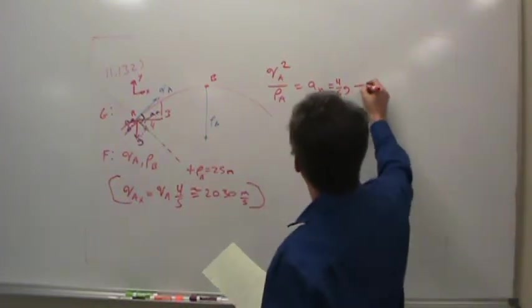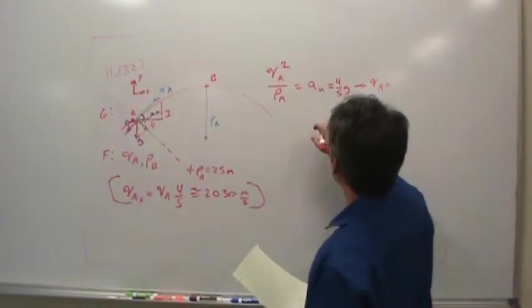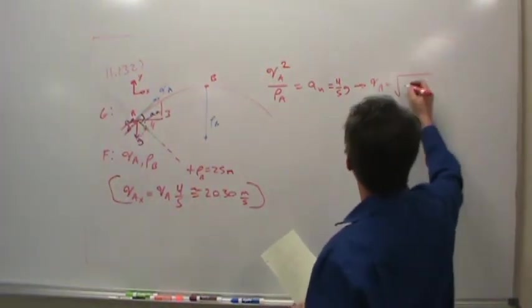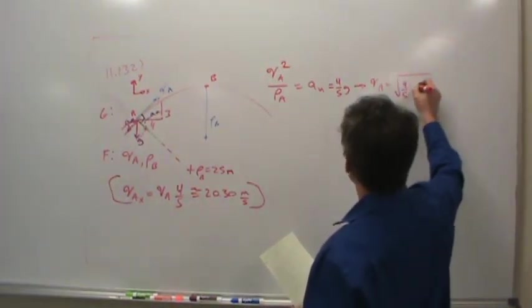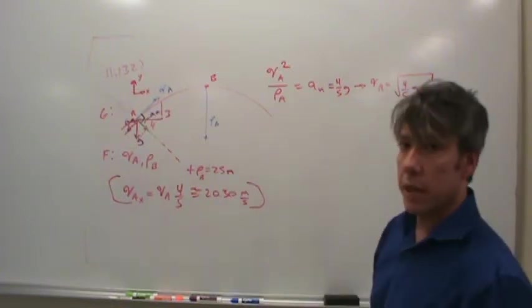So to calculate VA, all I would have to do is rearrange the equation and say, well, let's see. Multiply rho on the other side, make the square root, doing all the math quickly, four-fifths, g rho A, should be the velocity of A.